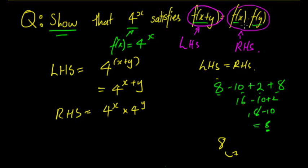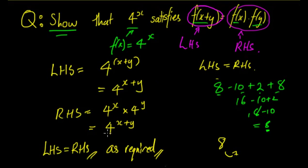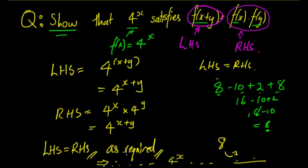For this example, I want to simplify the right-hand side so it equals the left-hand side. The right-hand side is 4^x · 4^y. Using index laws, 4^x · 4^y = 4^(x+y), which equals the left-hand side. So the left-hand side equals the right-hand side, as required. If the question says 'determine,' you would write: LHS = RHS, therefore 4^x satisfies this equation.